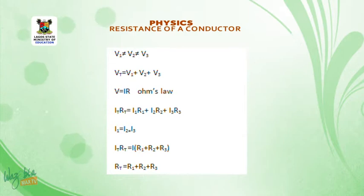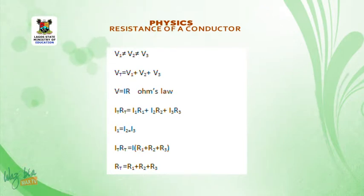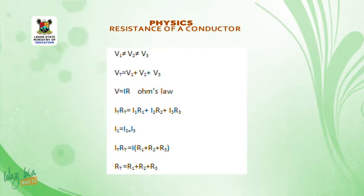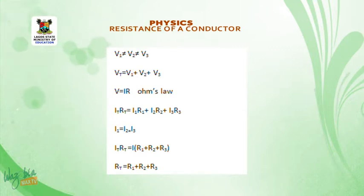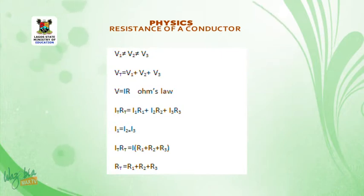According to Ohm's law, V equals IR. So I substitute: IT × RT equals I1×R1 plus I2×R2 plus I3×R3. Since I1 equals I2 equals I3, current I is common. Therefore: IT × RT equals I × (R1 + R2 + R3).